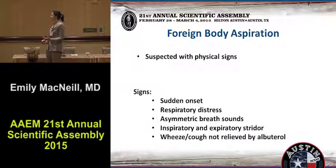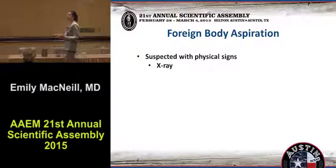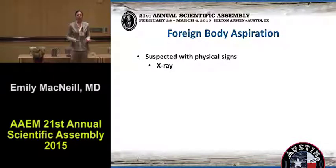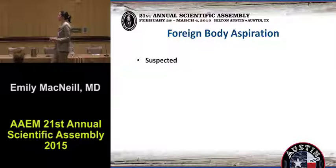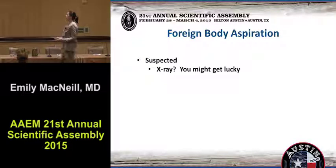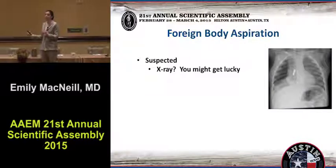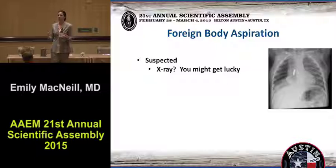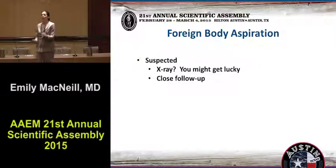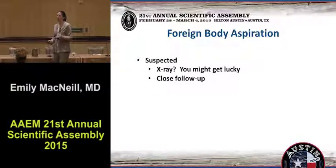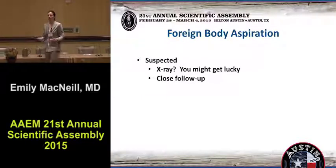For the suspected with physical signs: sudden onset respiratory distress, maybe some stridor, maybe a wheeze or cough not relieved by albuterol. You're going to get an x-ray — maybe you'll see something, maybe you won't, but it's irrelevant. If you have suspicion for a foreign body and they're making noise, they're going to get a bronch. They need to go somewhere where they can get a bronch. If it's just suspected — a Lego is missing — get an x-ray. You might see a hyperinflated chest on one side. Please, if somebody knows anybody at Lego, ask them if they could make their pieces radiopaque, because so far they have not. These kids need close follow-up, because you want to make sure the parents know: if Johnny gets a fever and a cough, make sure whoever takes care of him next time knows he might have inhaled a Lego. Complications increase with passing time.